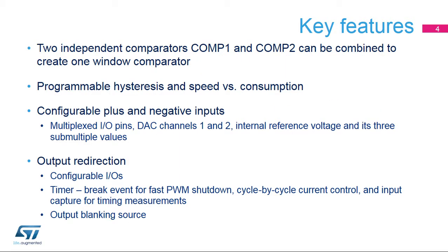The two integrated comparators can be combined into a single window comparator. The analog properties of the comparator include hysteresis, or a trade-off between speed and power consumption, which are configurable. It offers flexible interconnections of inputs and outputs, allowing threshold selection of several external and internal inputs such as DAC outputs or internal reference voltage outputs.